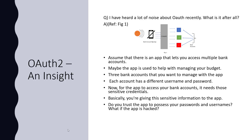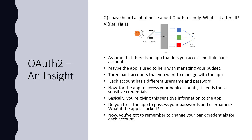What happens when the app, after processing the sensitive information of password and username, is hacked? It will lead to a security breach, and you have to remember to change your bank credentials for each account. This is the fundamental problem that OAuth2 solves.